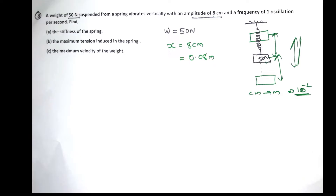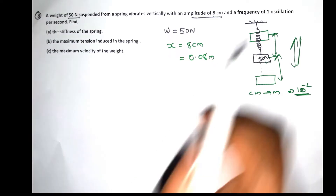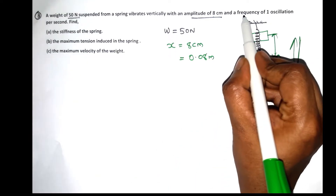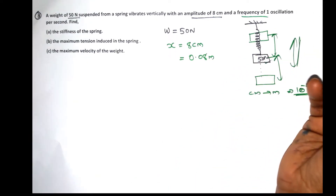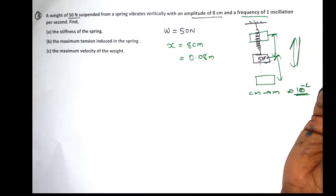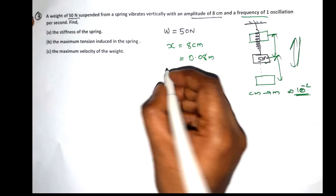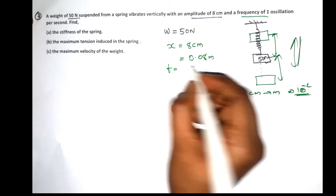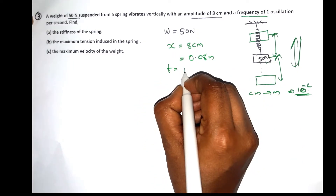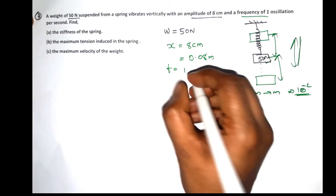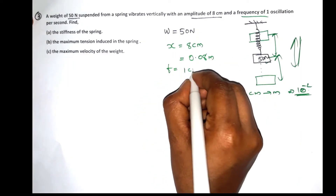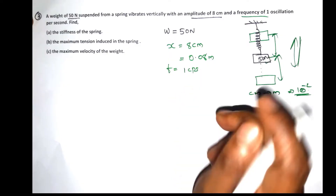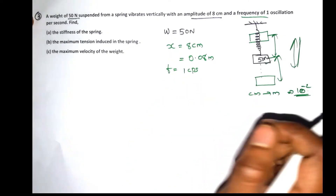The frequency of oscillation is 1 oscillation per second, so frequency f equals 1 cycle per second (1 cps). That is the standard unit for frequency.